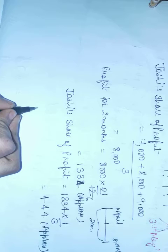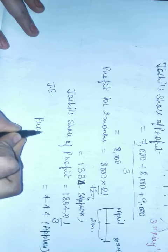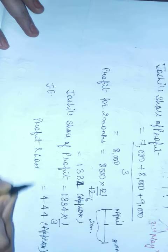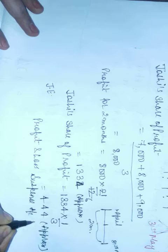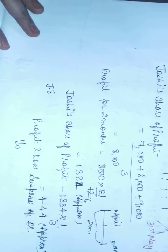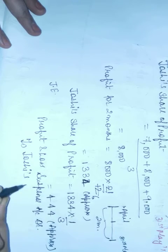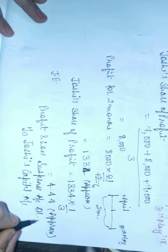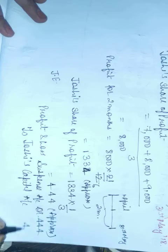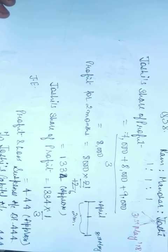I am passing the journal entry now. The journal entry is: Profit and Loss Suspense Account Dr. to Deceased Partner, that is Joshi's Capital Account.